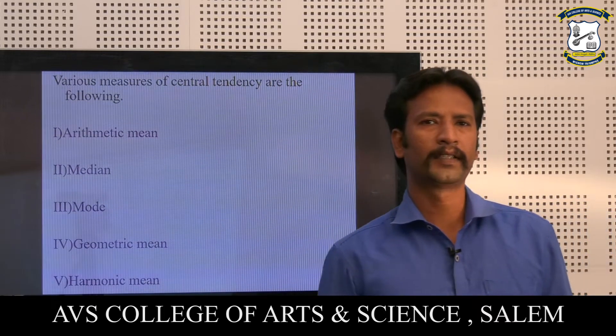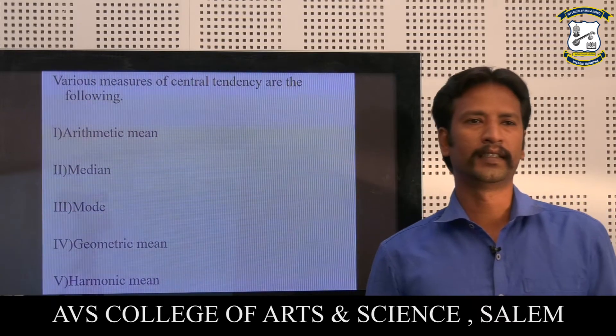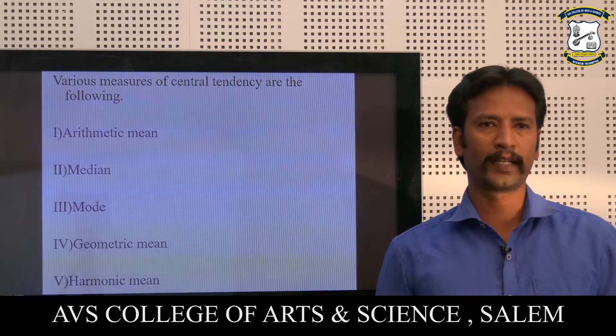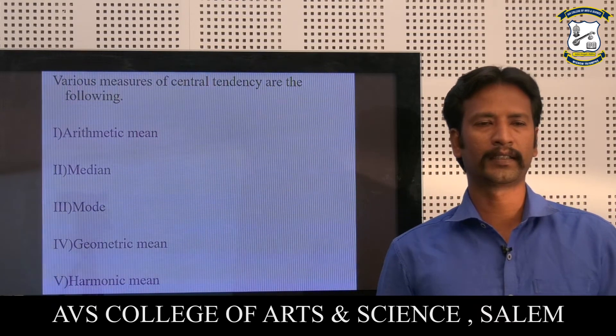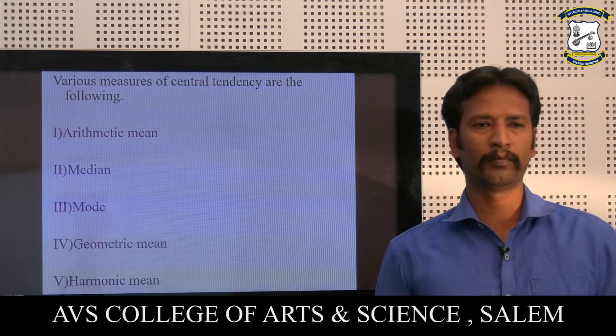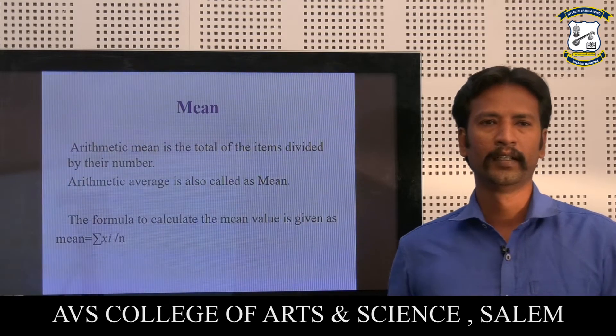There are various measures of central tendency. The first one is arithmetic mean, the second one is median, the third one is mode, the fourth one is geometric mean, and the last one is harmonic mean.